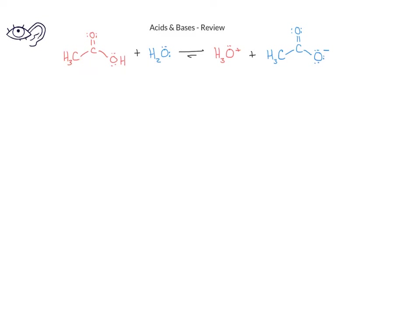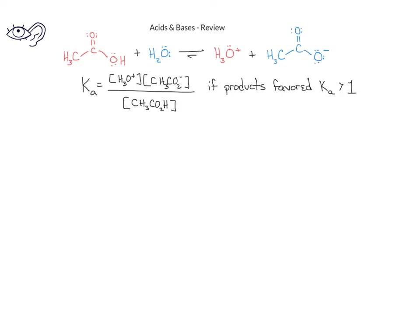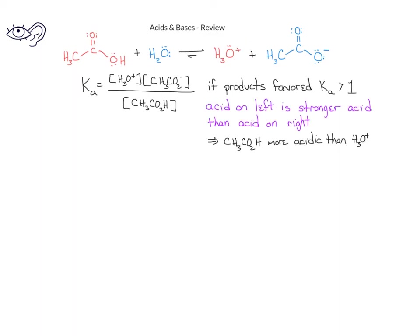You might recall from general chemistry that we could write an equilibrium constant expression for any equilibrium equation. In this situation, we have the hydronium ion concentration and the acetate ion concentration on top, since those are the products, and the reactant concentration of the acetic acid on the bottom. If the forward reaction is favored, we would expect a higher concentration of products and a smaller concentration of reactants, and the value of Ka, the acid dissociation constant, would be greater than 1. This would be the situation if the acid on the reactant side is a stronger acid than the acid on the product side. Since in this equilibrium the forward reaction is favored, that means acetic acid is a stronger acid than the hydronium ion.